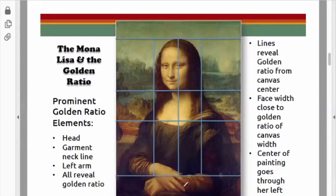All of this reveals the golden ratio. The lines reveal the golden ratio from the canvas center. Her face width is close to the golden ratio of the canvas width, and the center of the painting goes through her left eye, which we can see here.